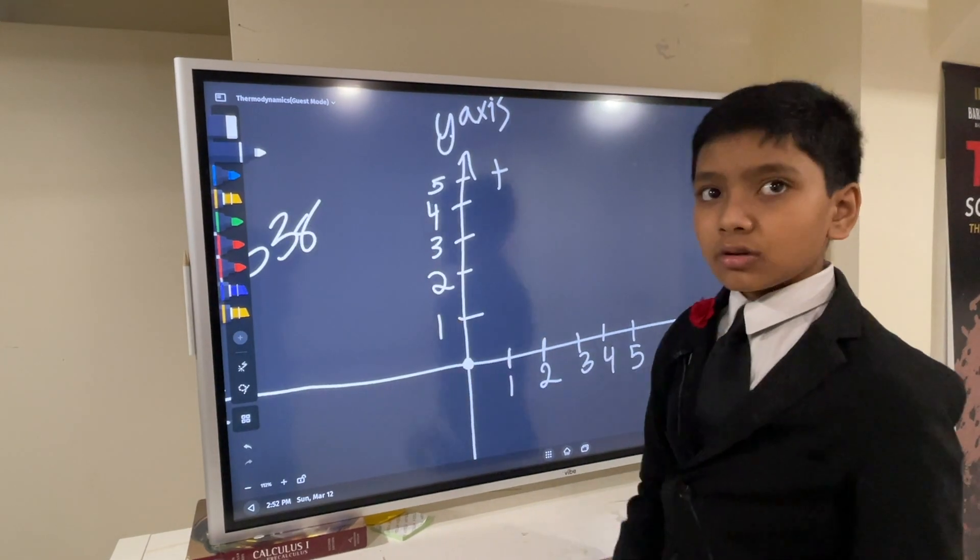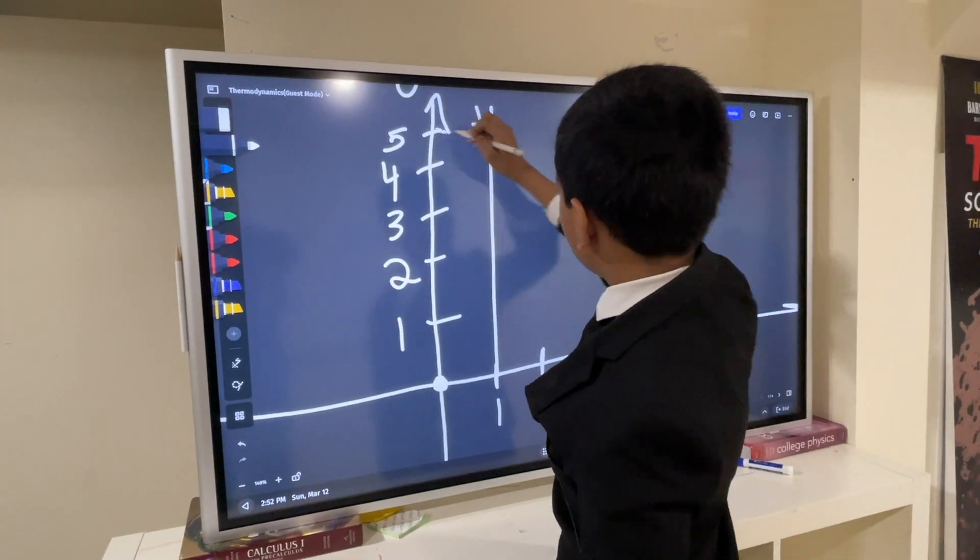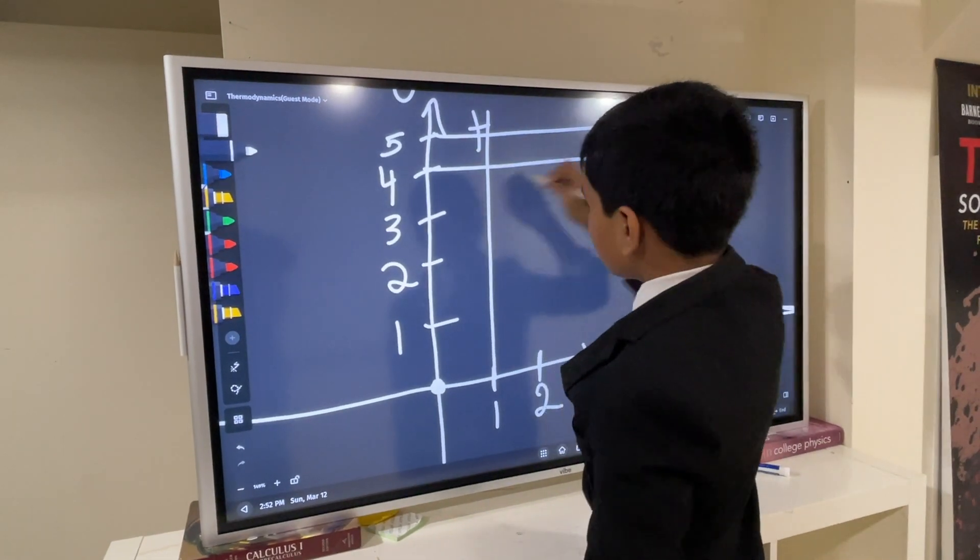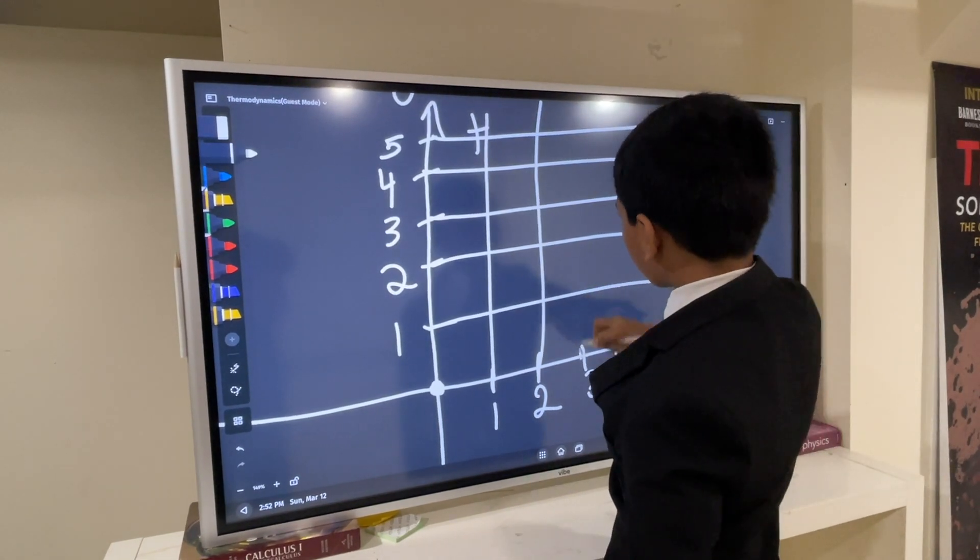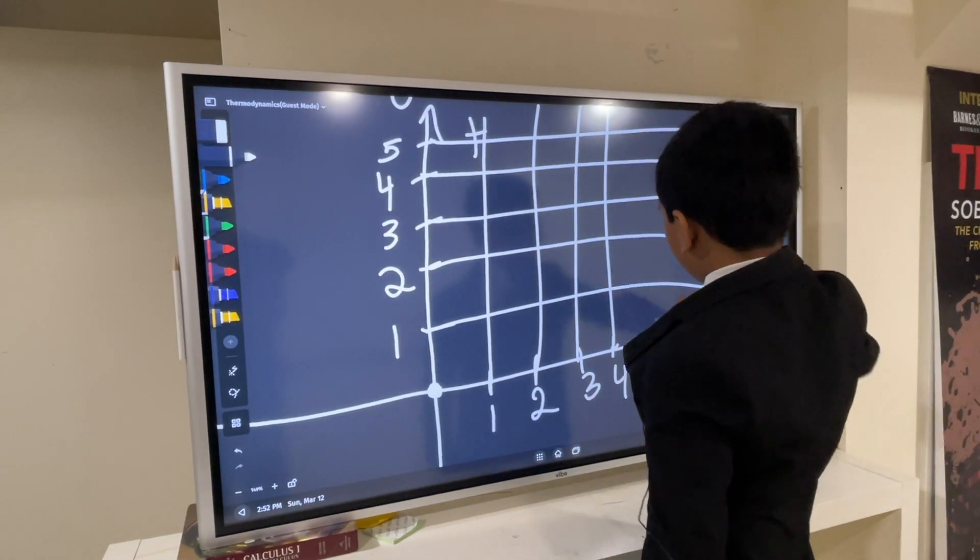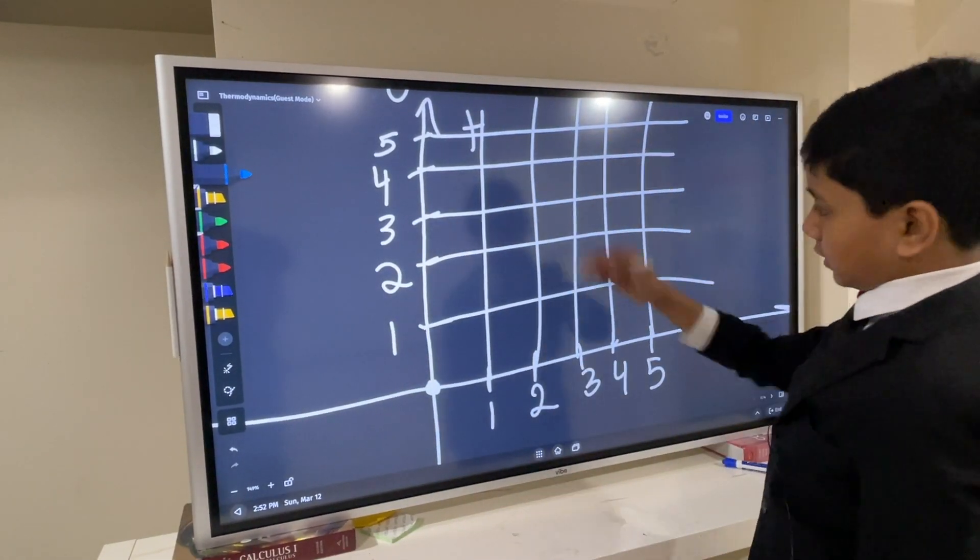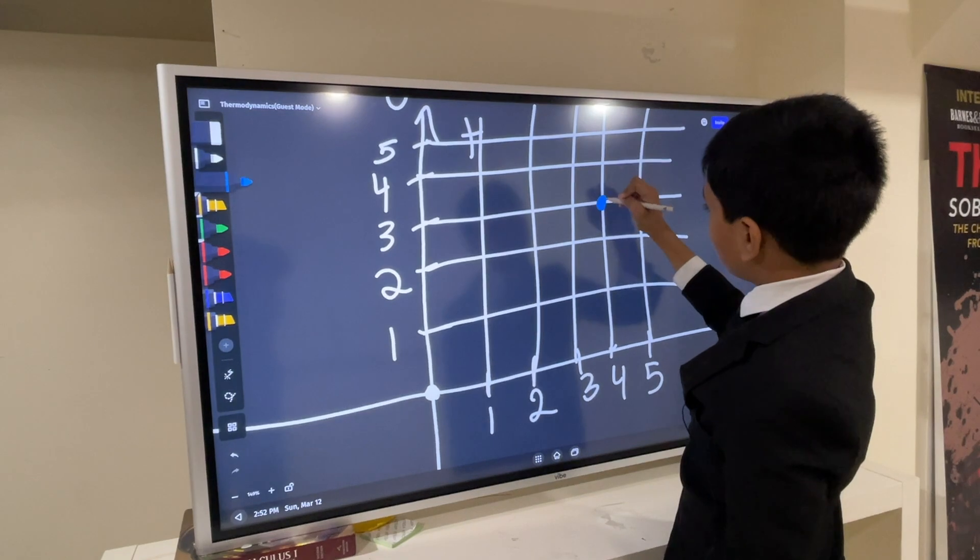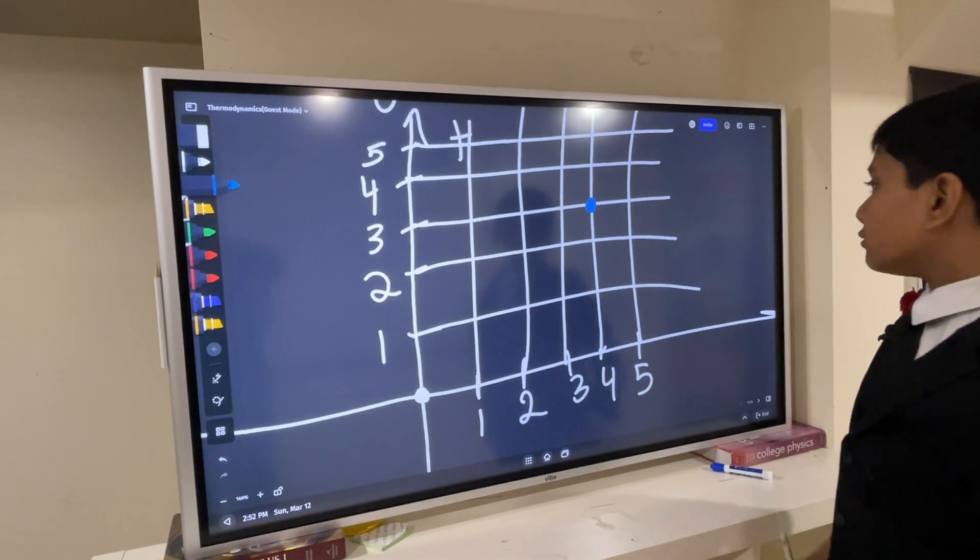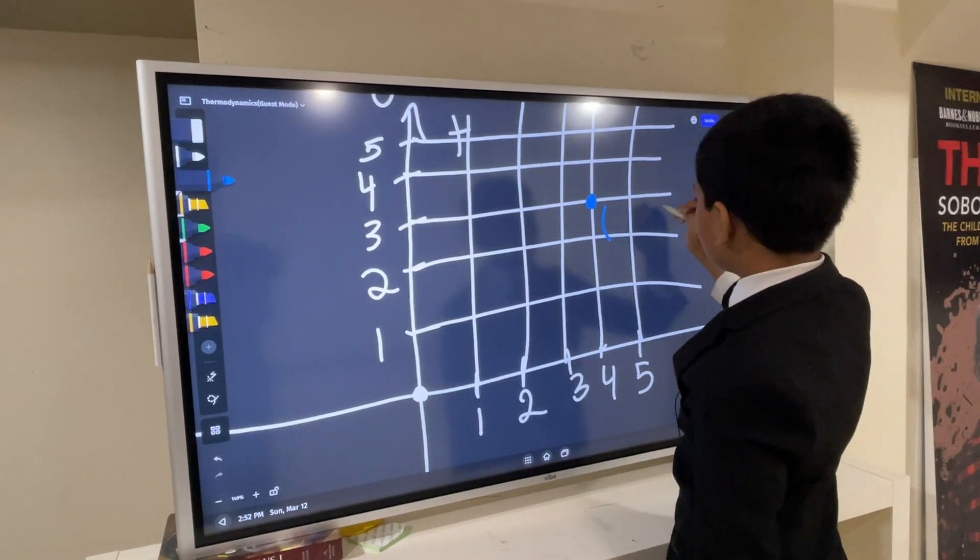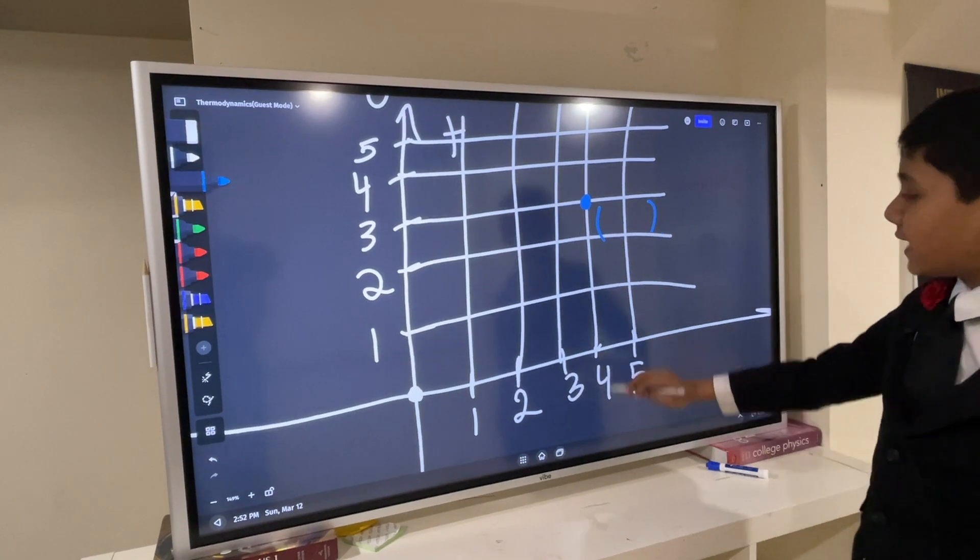So, the coordinate plane basically has a little grid. This grid is where you can plot points. And if you have a point, say, let me put it somewhere random here. How would you express its position?